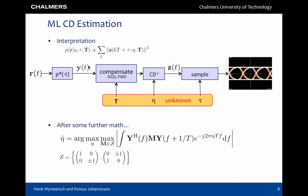Some further math is needed to get rid of the remaining parameters, but in the end we find an estimator of eta, involving a line search over eta, and a maximization over set of four matrices. The objective function involves the Fourier transform of the matched filter output, and a frequencies shifted version thereof.